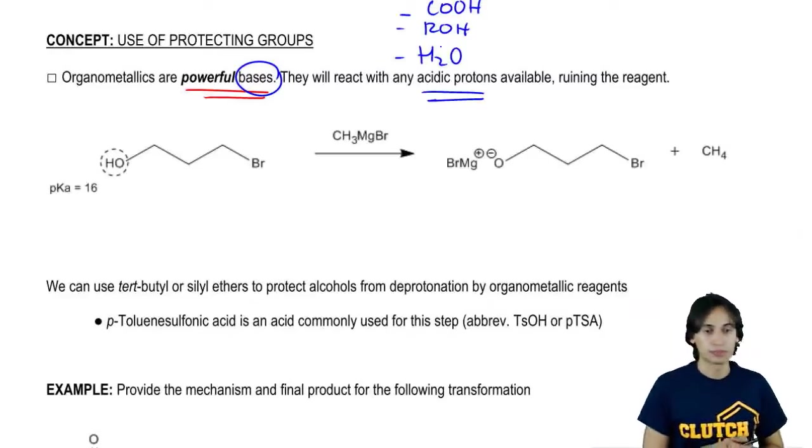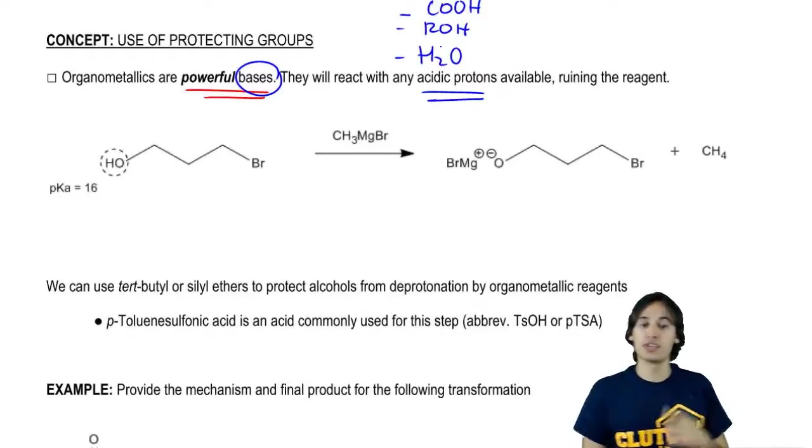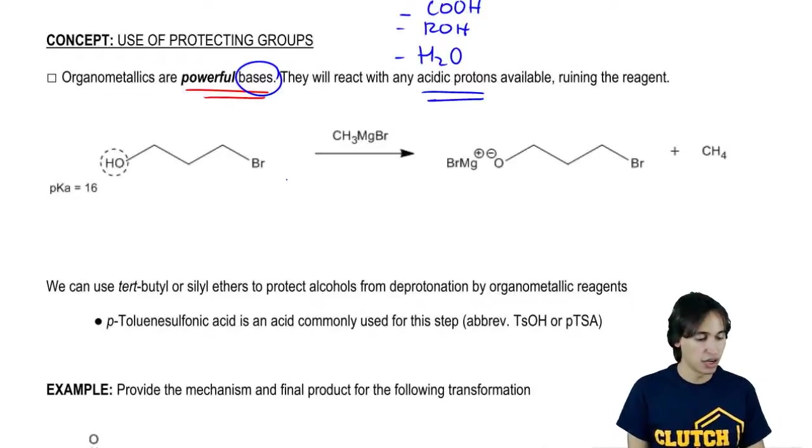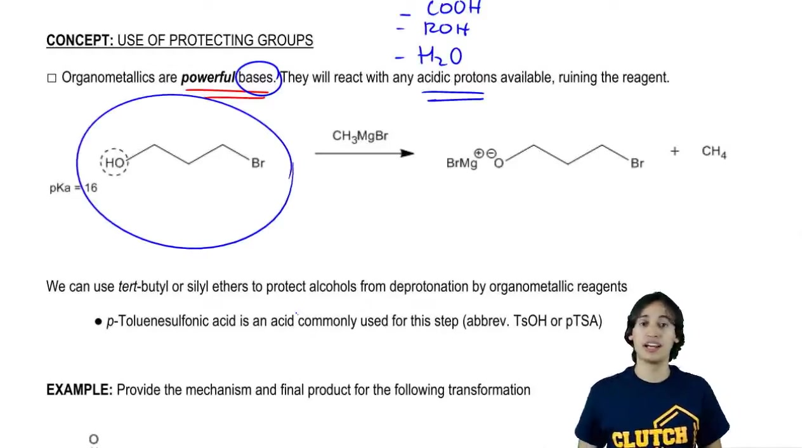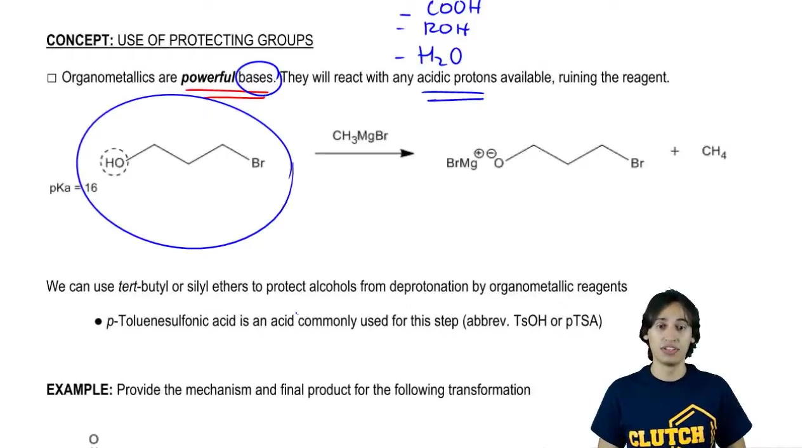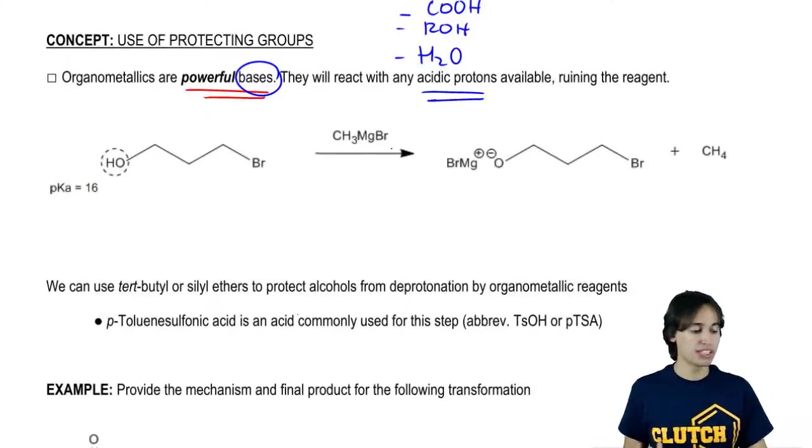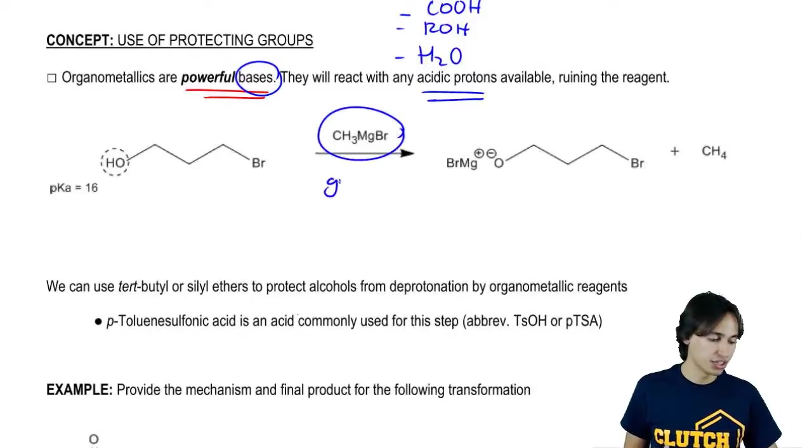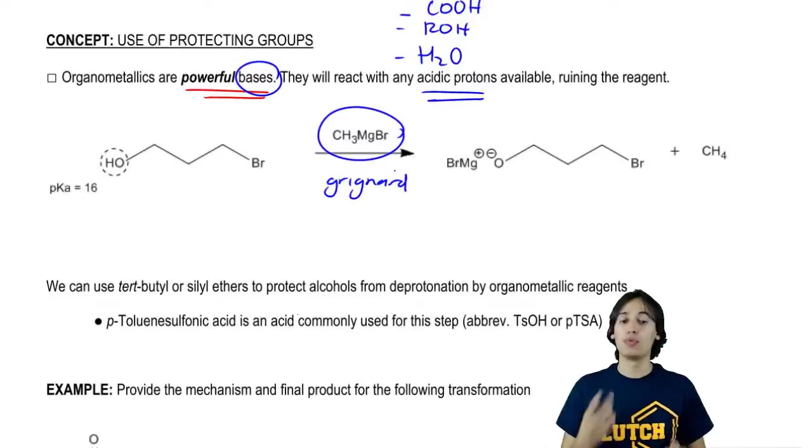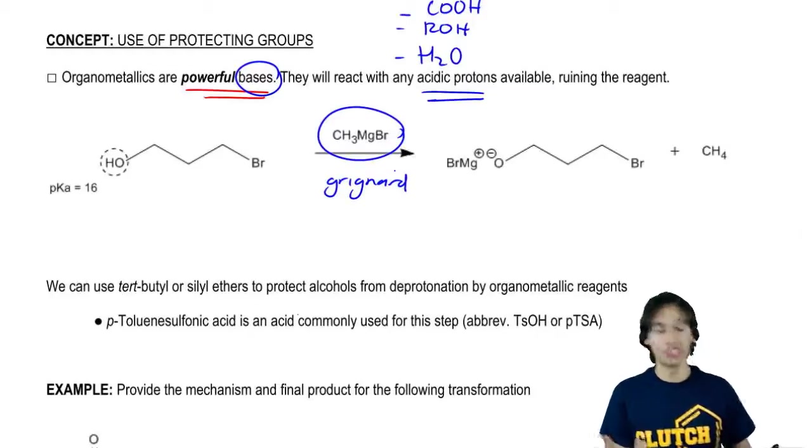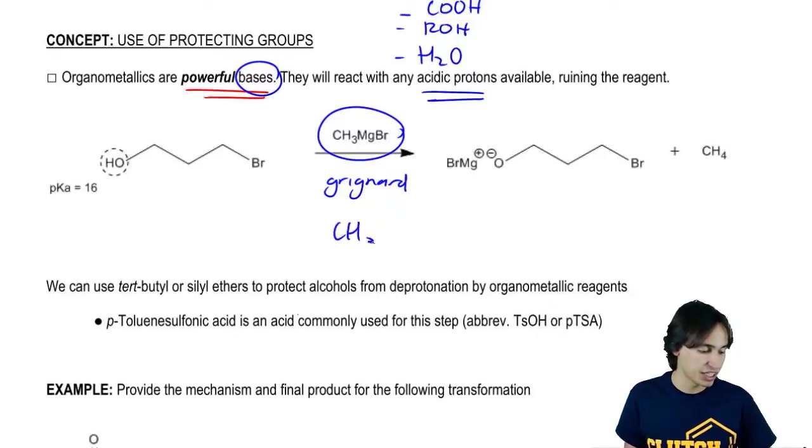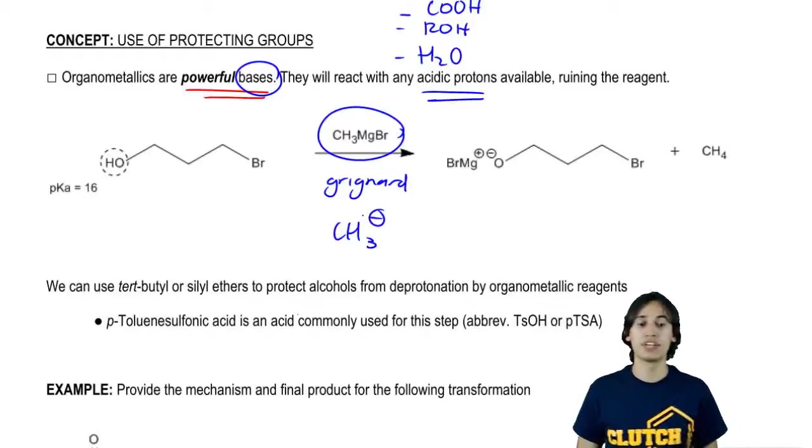Let me give you an example. Let's say I was trying to do a substitution reaction on this molecule. Notice that it has an alkyl halide on one side and an alcohol on the other. My reagent here is a Grignard. We know that we like to draw Grignard reagents as CH3 negative. That tells me I've got a negative charge that's going to attack something positive.